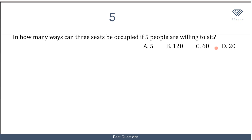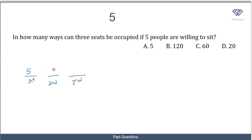In the next question, we are asked: in how many ways can 3 seats be occupied if 5 people are willing to sit? You have 3 particular seats. The first seat can be occupied by any of the 5 people, so you have 5. The second seat can be occupied by any of the remaining 4, so you have 4. The last seat can be occupied by any of the remaining 3. Multiplying together: 5 × 4 × 3 = 60.